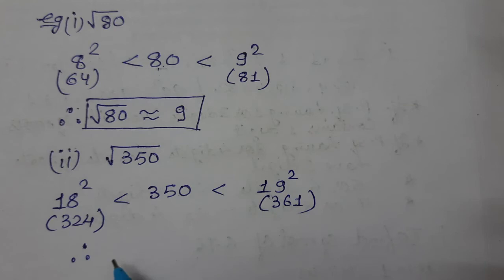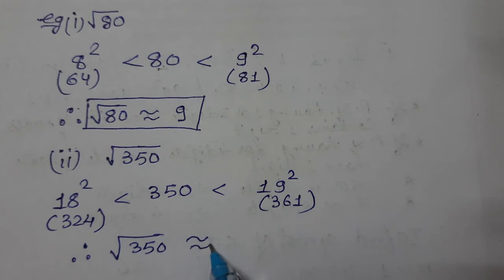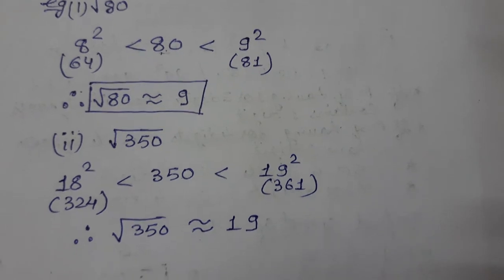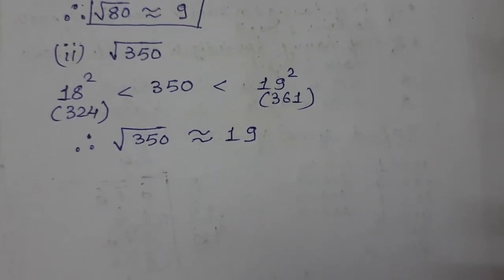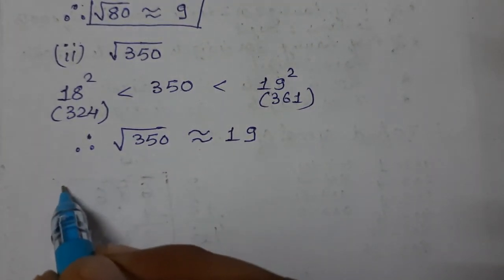So 350 lies between these. When we estimate, which is closer? It's closer to 19 squared, which is 361. Therefore, the square root of 350 is approximately 19.